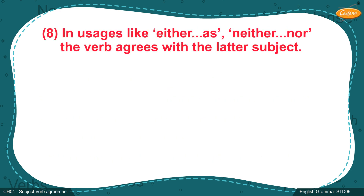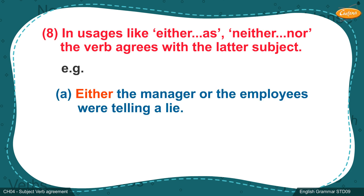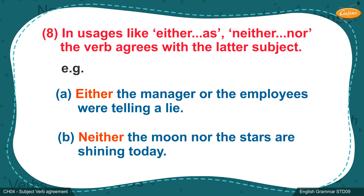Rule 8: In usages like 'either...or' and 'neither...nor', the verb agrees with the latter subject. Example A: 'Either the manager or the employees were telling a lie.' Example B: 'Neither the moon nor the stars are shining today.'